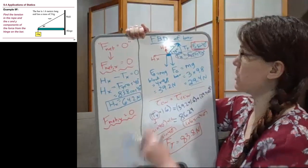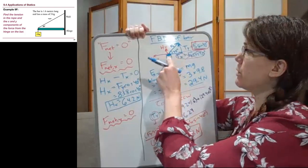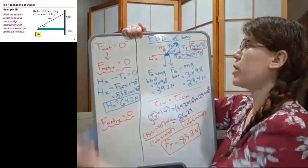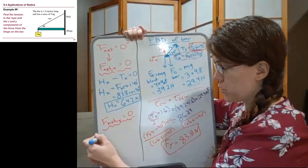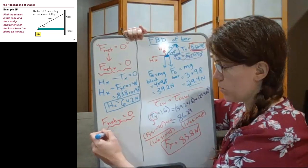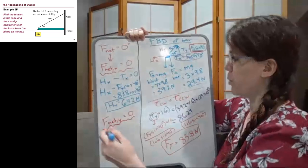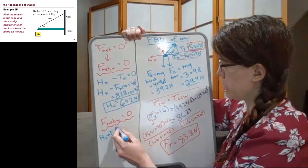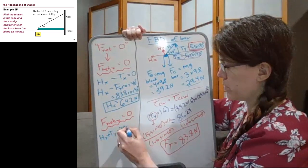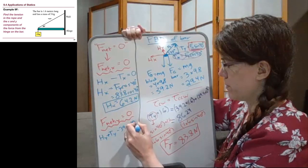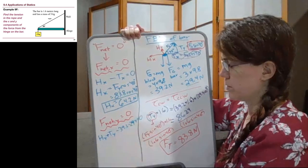For the y direction, we have one, two, three, four different arrows. So we'll have all the ones that point up, hy plus ty minus all the ones that point down. And I'm just going to plug in the numbers, 39.2 and 29.4 equals zero.